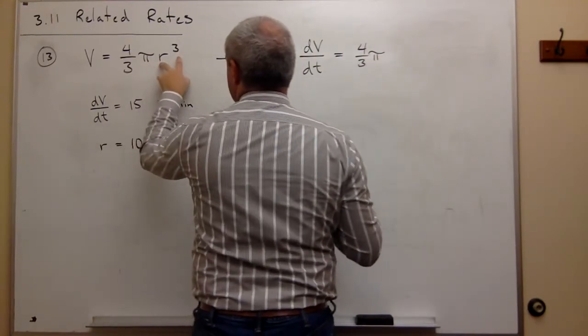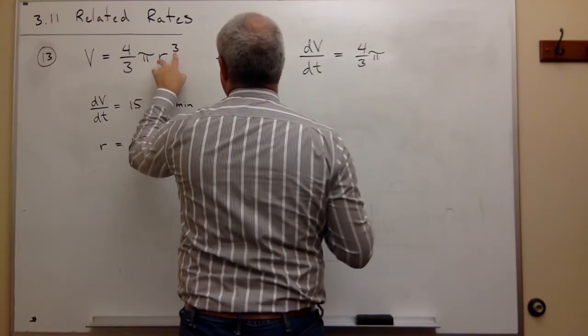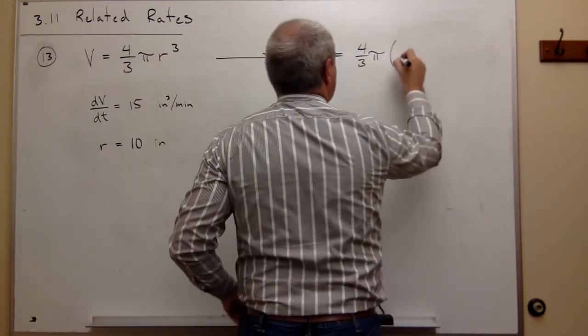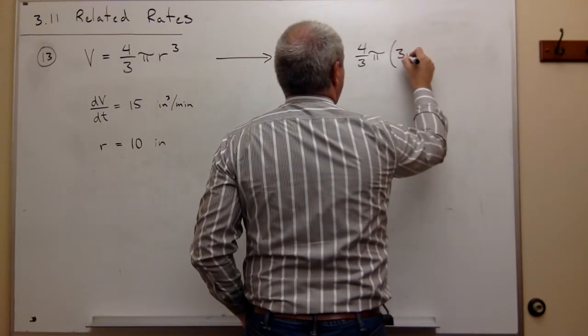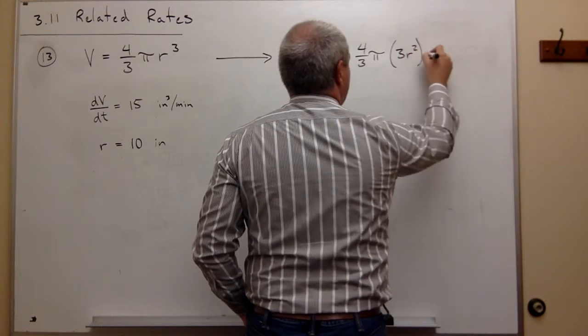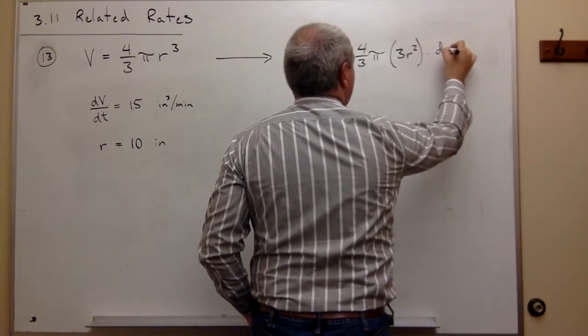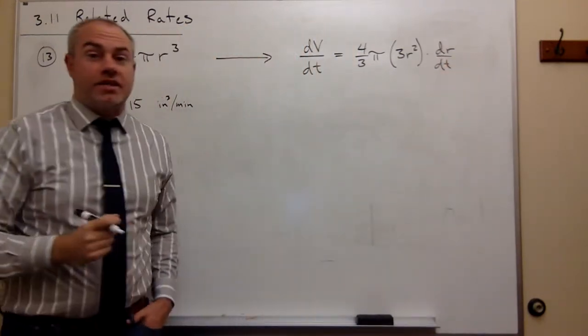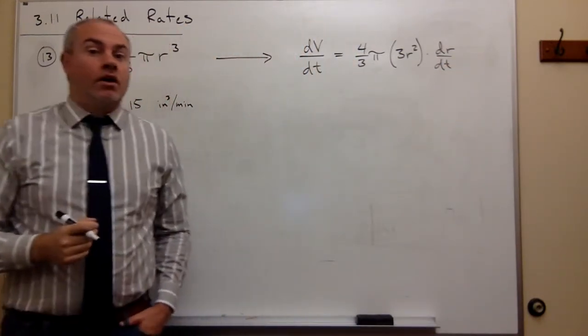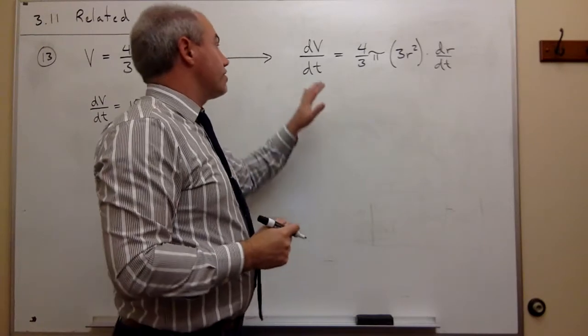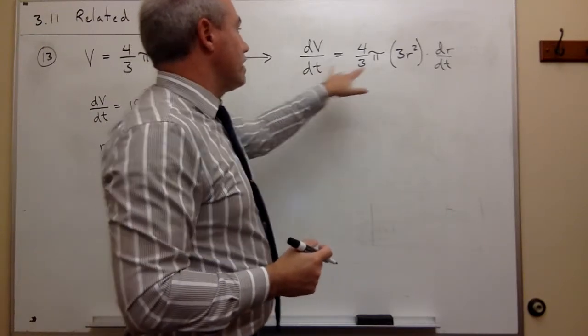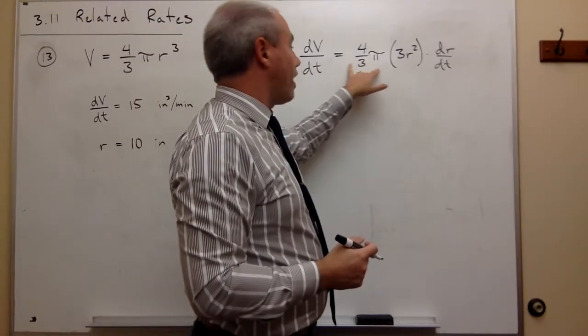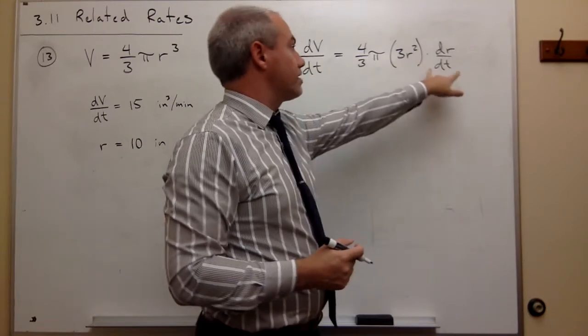Then I take the derivative of r³. The derivative of r³ by the chain rule is 3r² times the derivative of r, but it's the derivative of r with respect to t. So I've taken this derivative and I've got dV/dt = 4/3 π × 3r² × dr/dt.